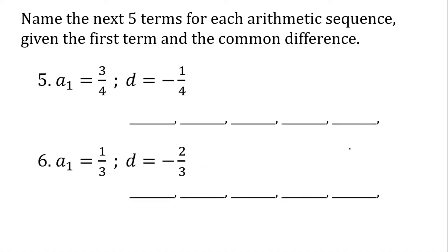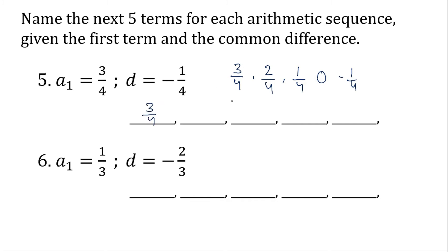For number five, let's work with fractions. I will use a denominator of four and simplify later. The first term is three over four. Three over four plus negative one-fourth is two over four. Two over four plus negative one-fourth is one over four. One over four plus negative one-fourth is zero. Zero plus negative one-fourth is negative one-fourth. Simplified: three-fourths, one-half, one-fourth, zero, and negative one-fourth.